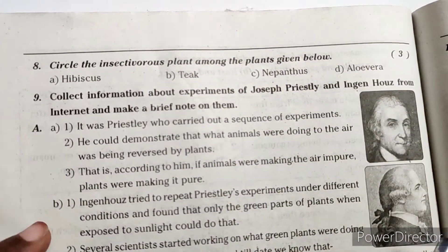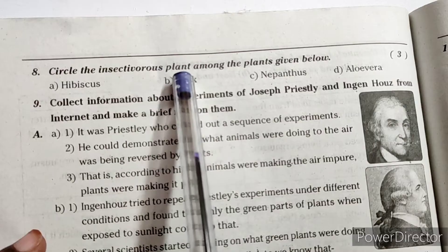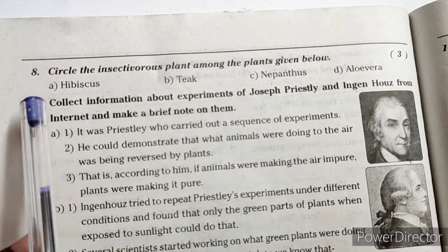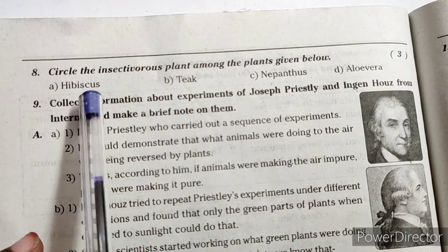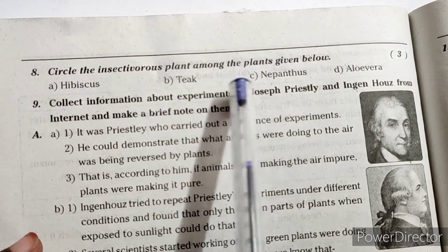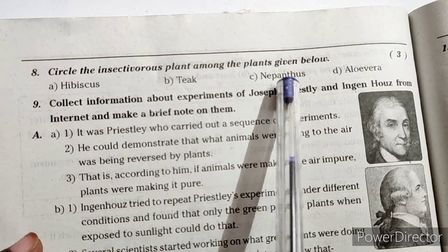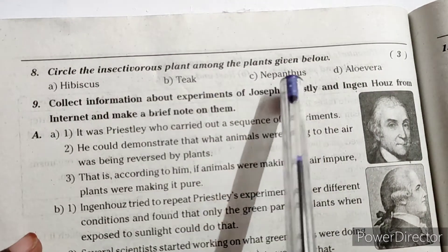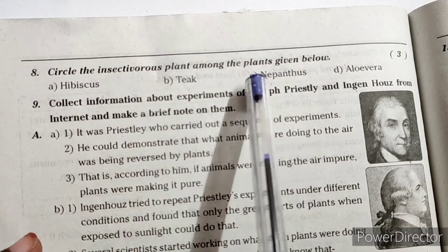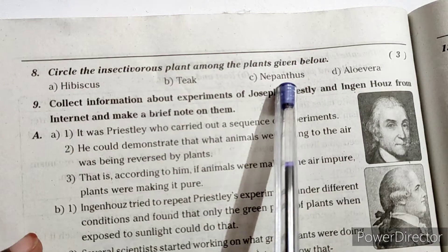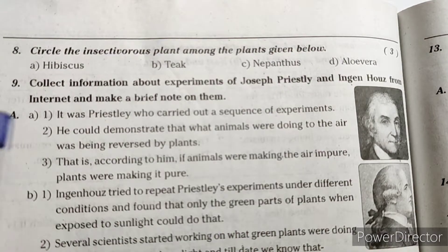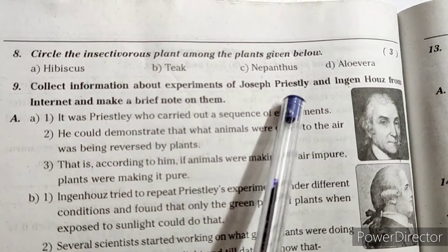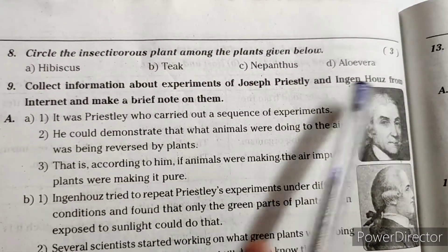Eighth question: Circle the insectivorous plant among the plants given below — hibiscus, teak, Nepenthes, or aloe vera. Answer: The insectivorous plant is Nepenthes.